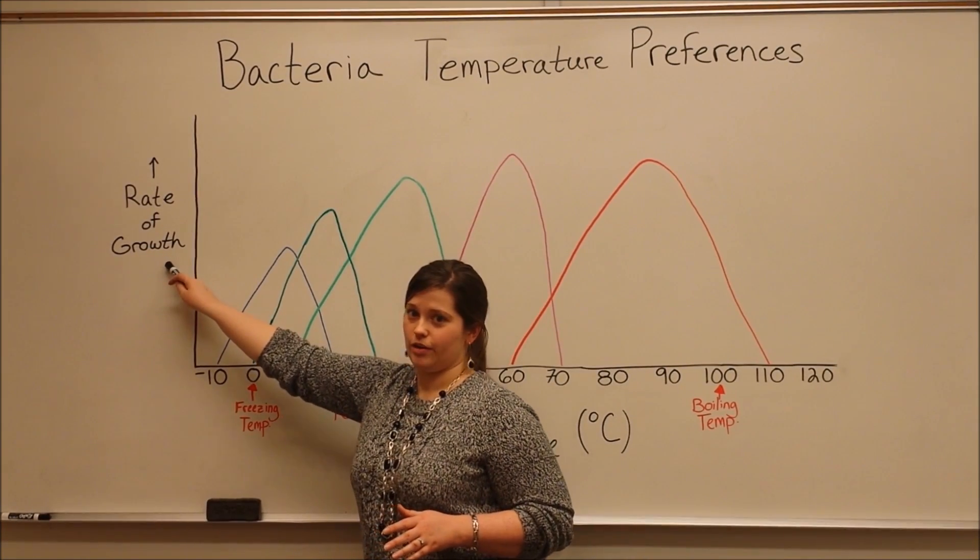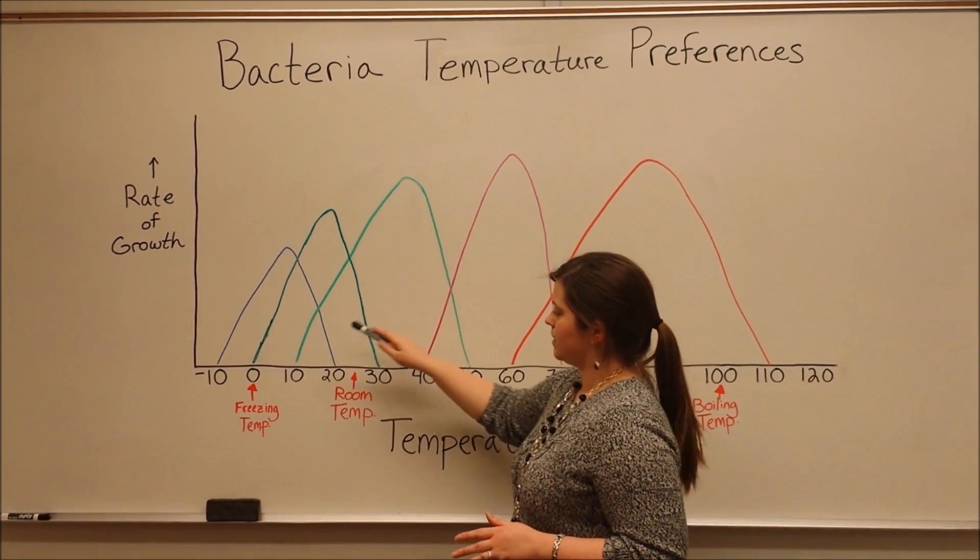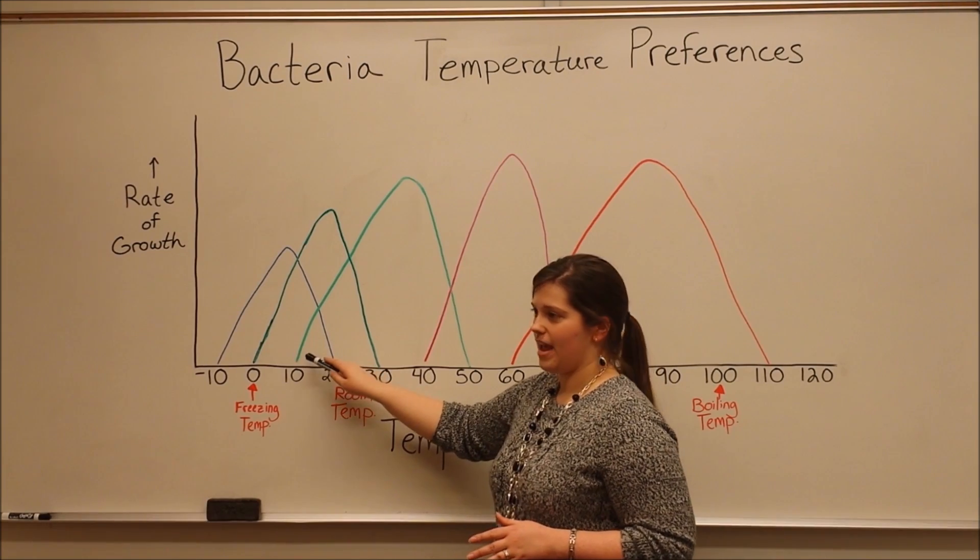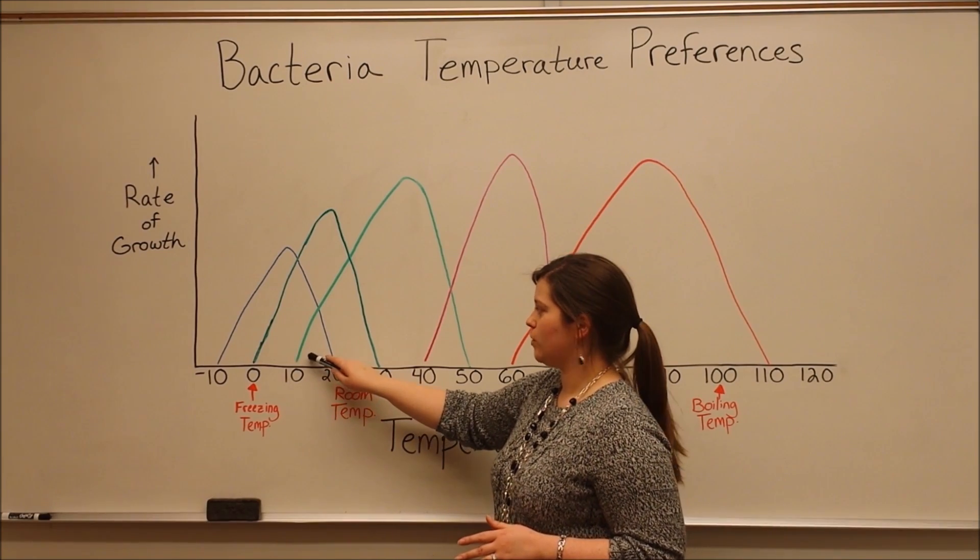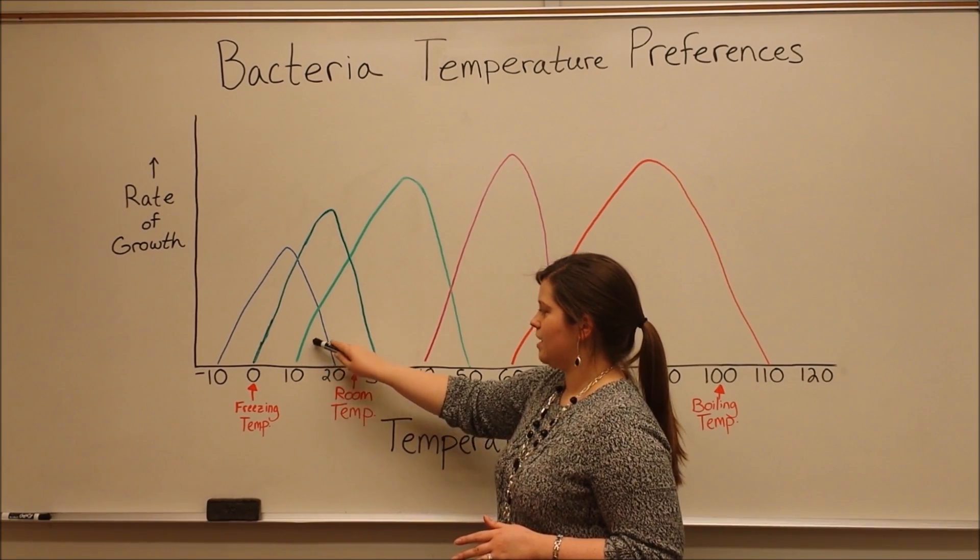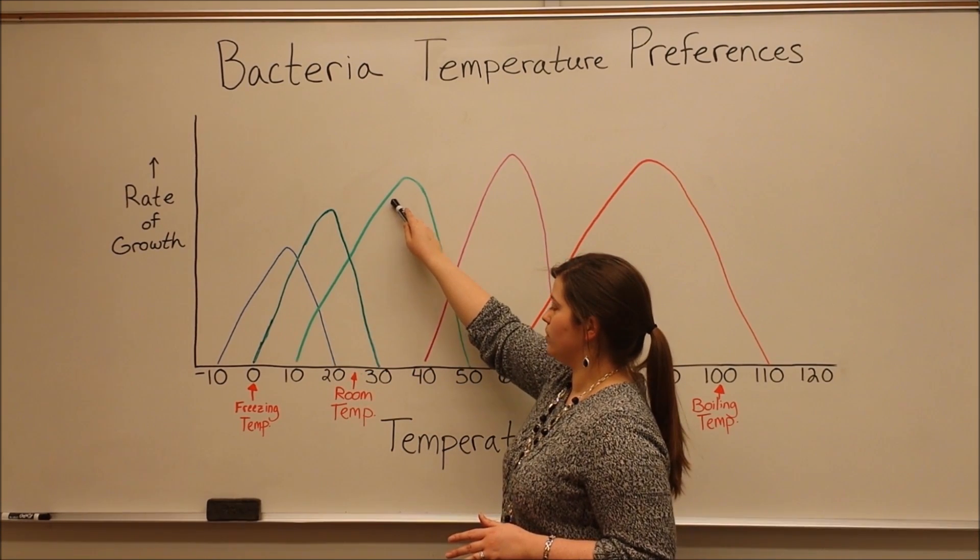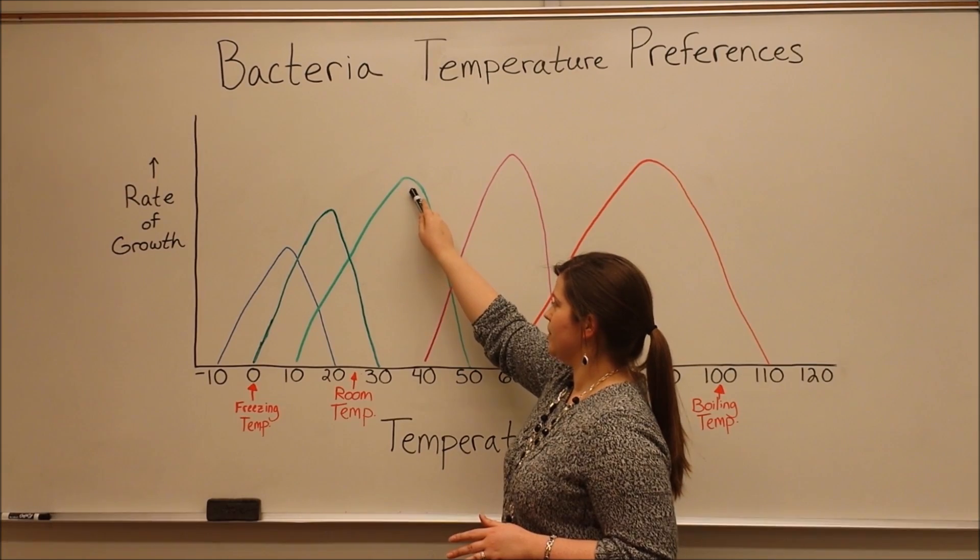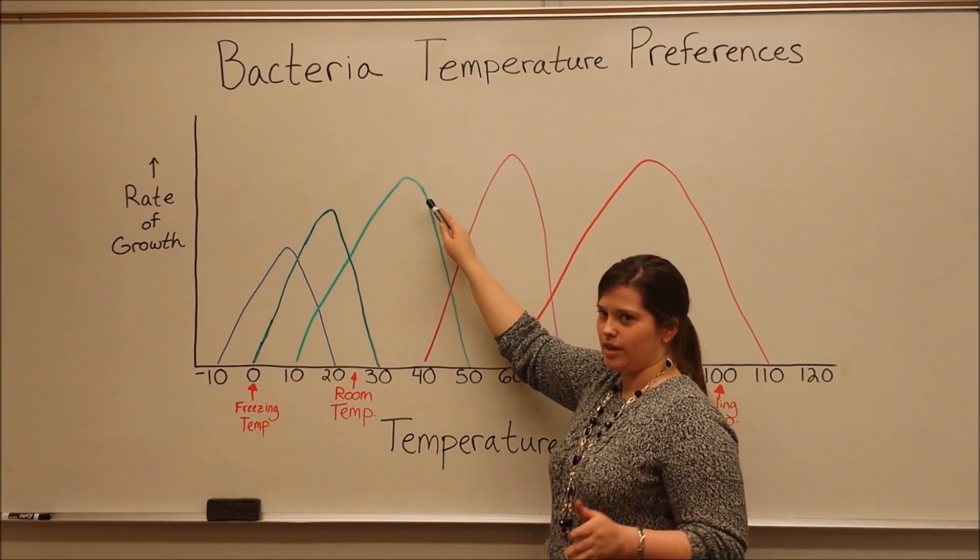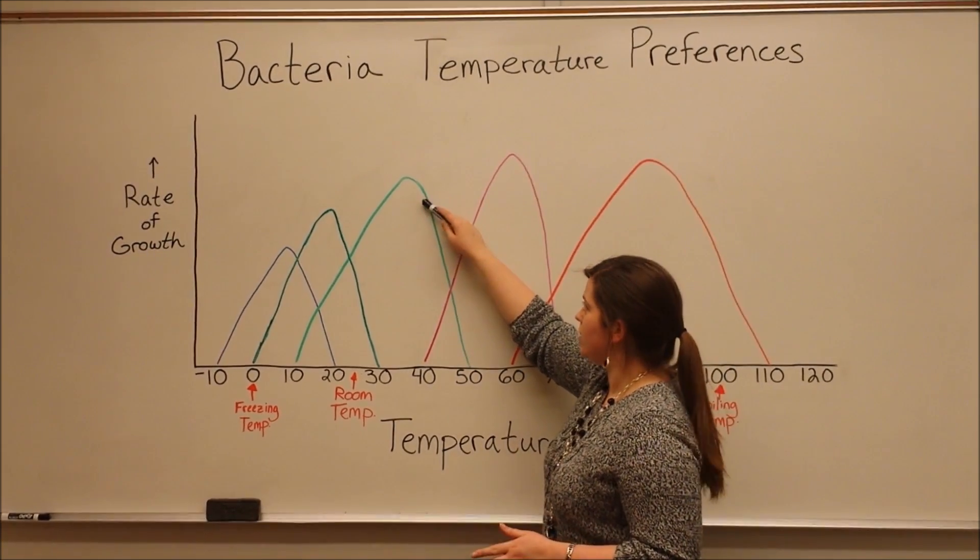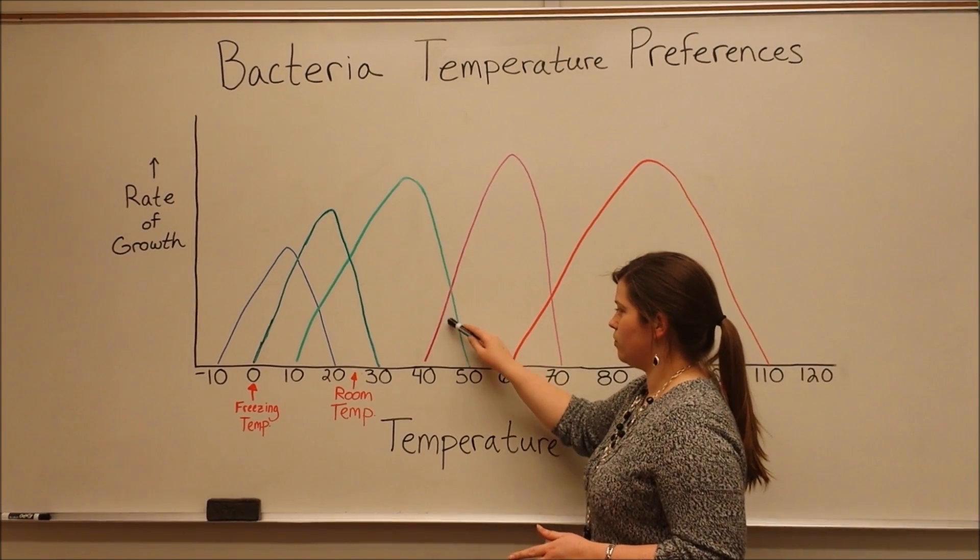Here we have the rate of bacterial growth. This means that bacteria have a minimum temperature at which they will grow, and then as you enter into their optimal range, their rate of growth increases. And then as you start to reach the maximal end of their temperature range, that rate of growth will decrease.